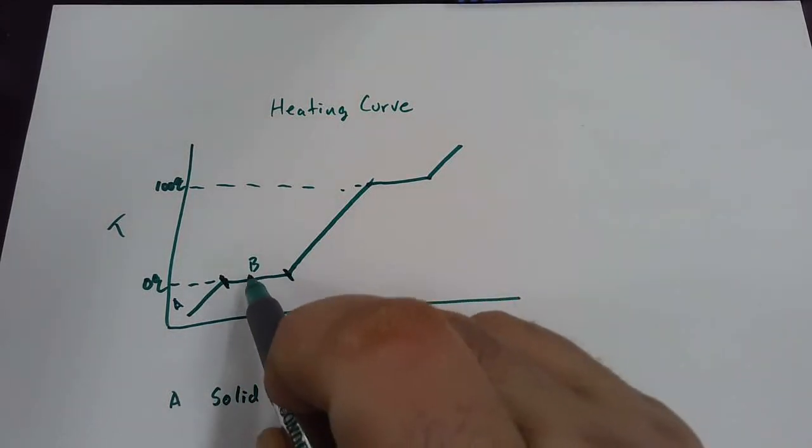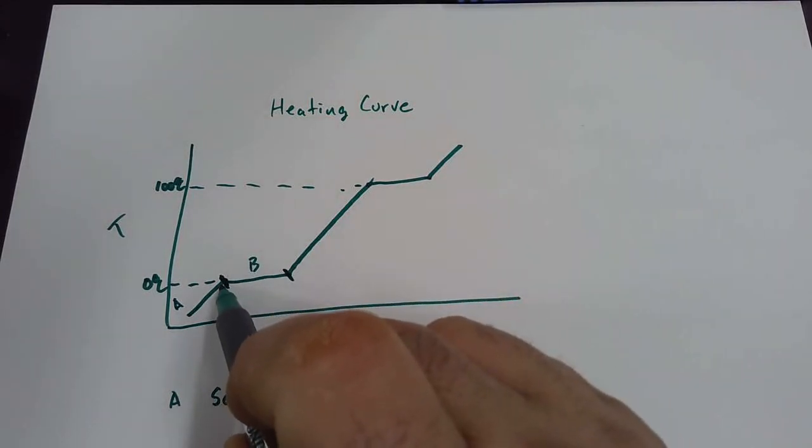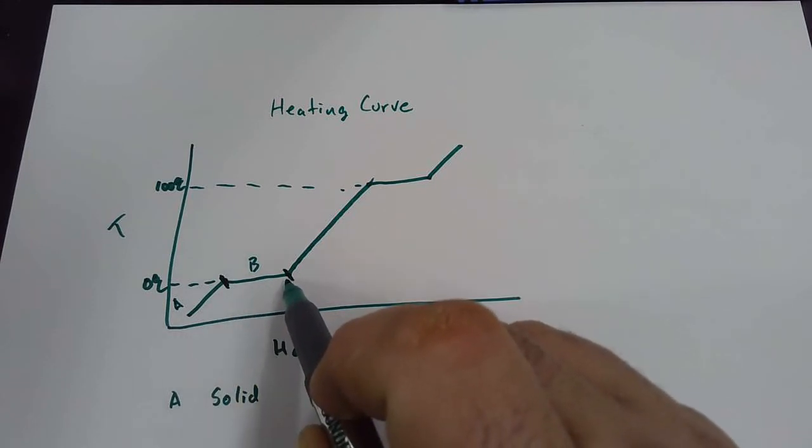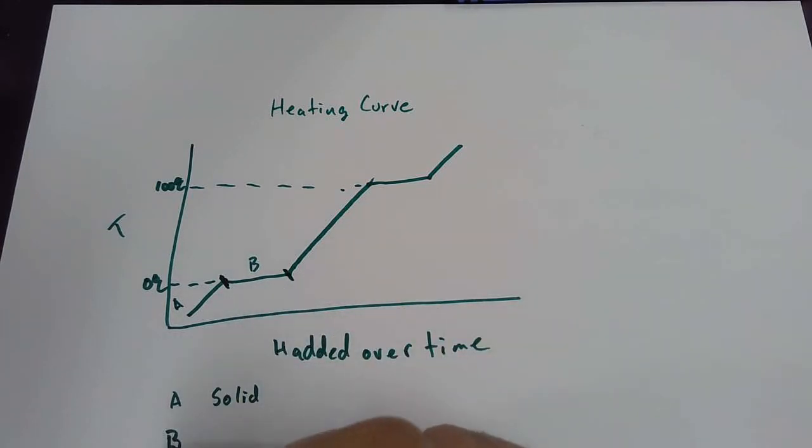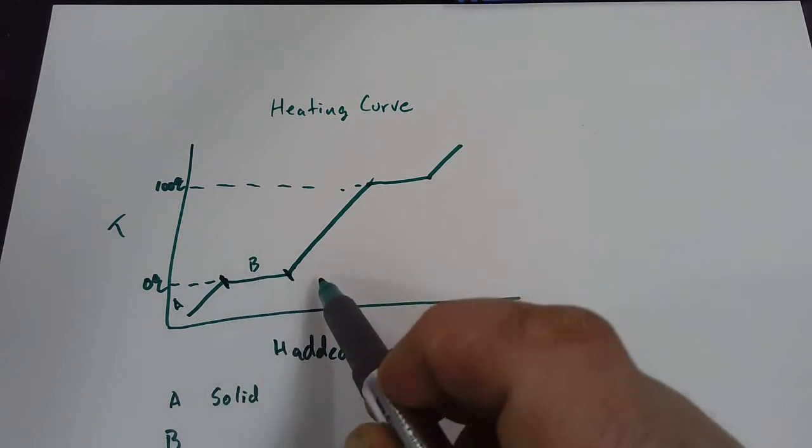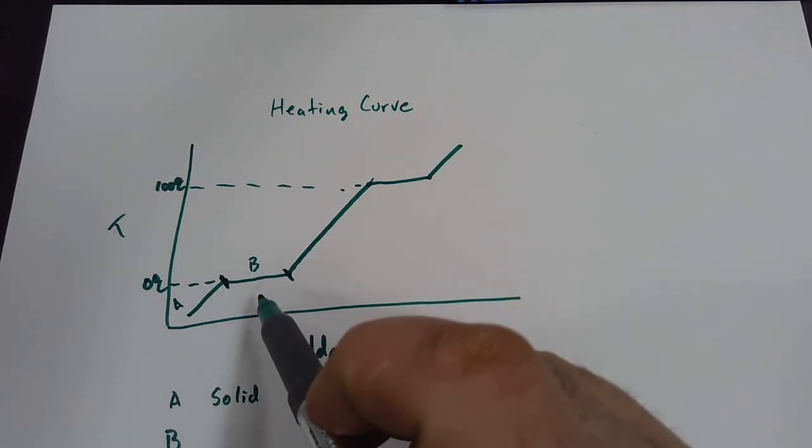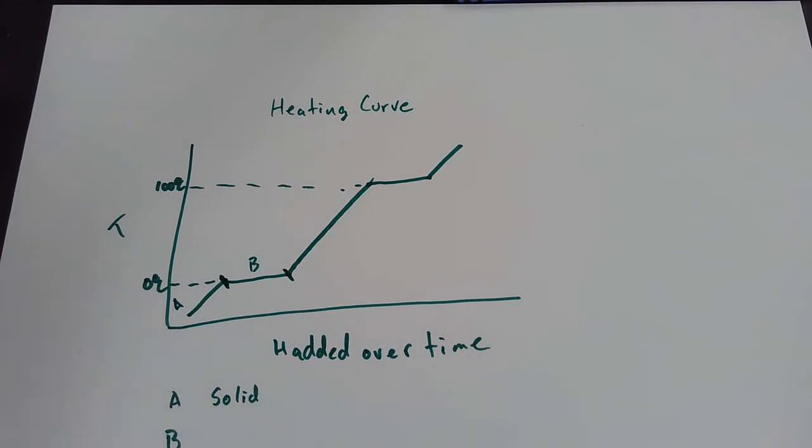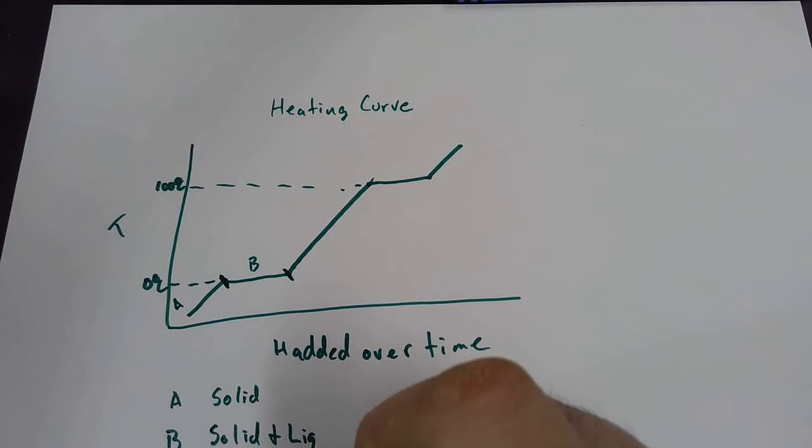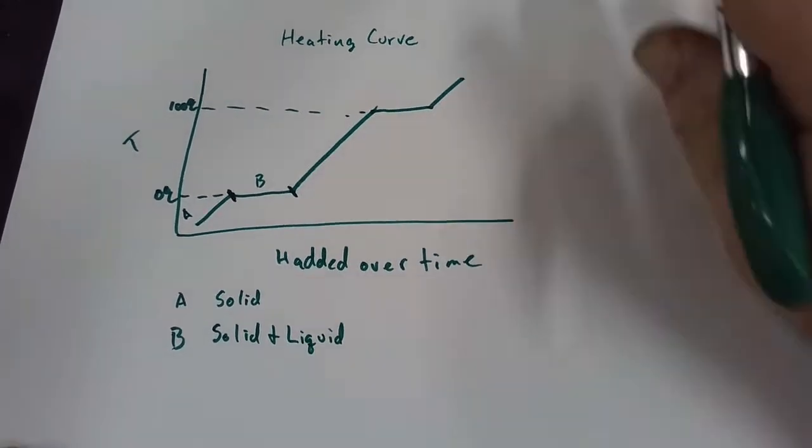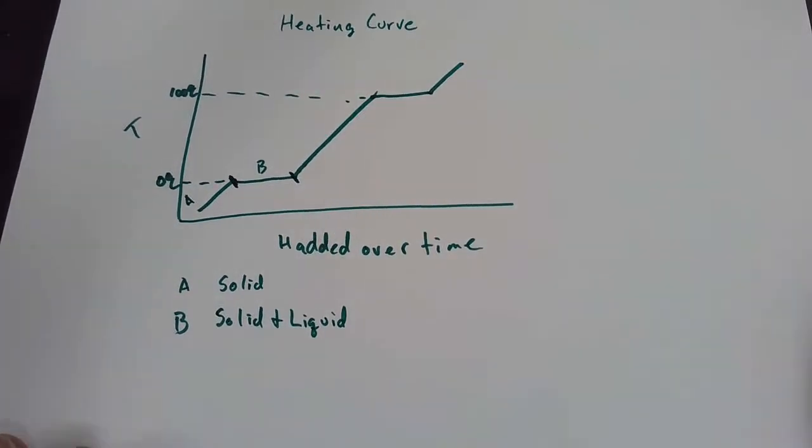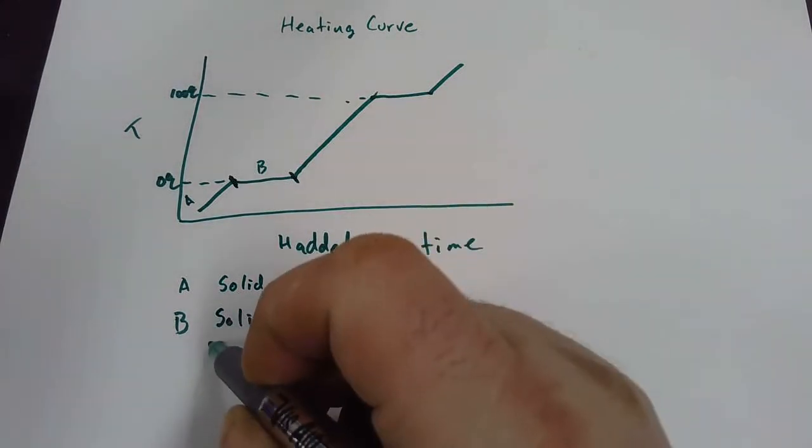So during segment B, what are the segments that could be present? All solid, all liquid. What's going to be in between? It's a transition, so it's going to be both solid and liquid. What do we call the point at which water becomes a liquid? This is our melting point.